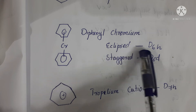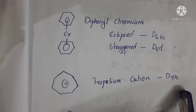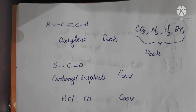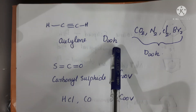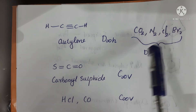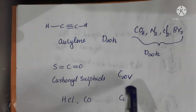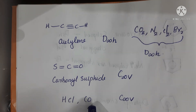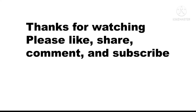Diphenylchromium eclipsed is D6H and staggered is D6D. Tropylium cation is D7H. Acetylene is D∞h, and similar linear molecules with D∞h point group are CO2, N2, Cl2, and Br2. Carbonyl sulfide (COS) and HCl are C∞v point group.